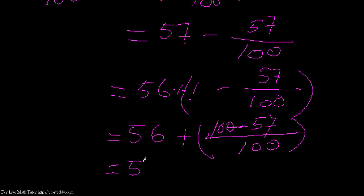So 56 plus, 100 minus 57: 10 minus 7 is 3, then 10 minus 6 is 4, giving 43/100.